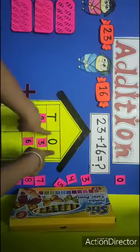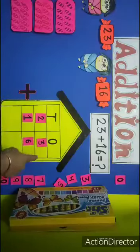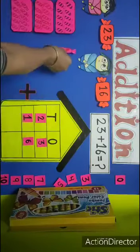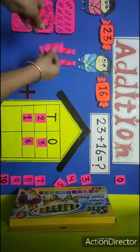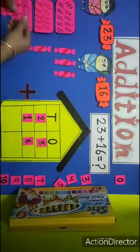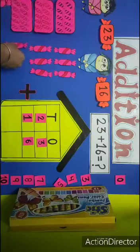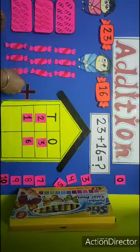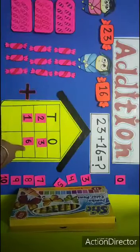Now, how many ones we need? 3 ones. 1, 2, 3. How many ones we need? 1, 2, 3, 4, 5, 6. Okay. Six ones.